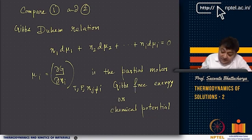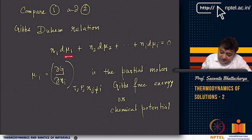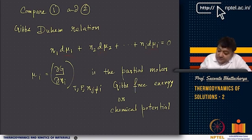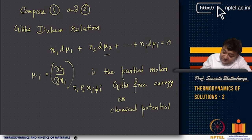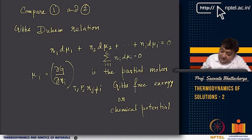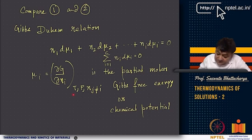In this last part of the lecture, I want to reprise the Gibbs-Duhem relation. As you can see, it is n1 dμ1 for species 1 and n2 dμ2 for species 2, and more generally Σi ni dμi = 0, where μi = ∂G/∂ni at constant temperature, pressure, and nj (j ≠ i).